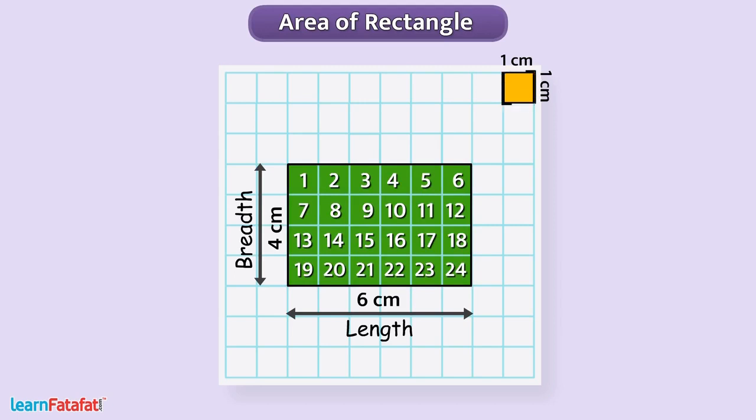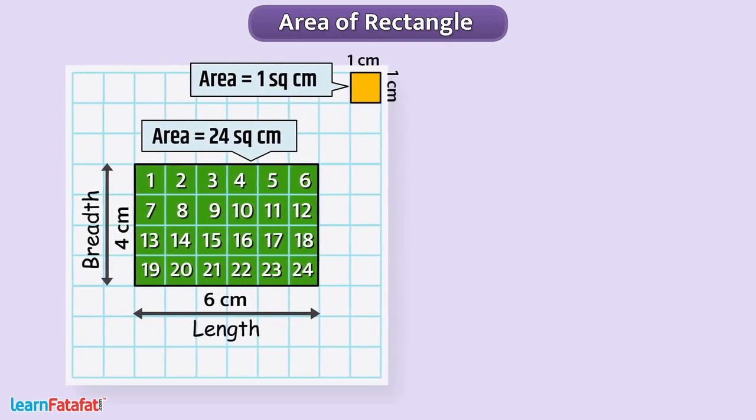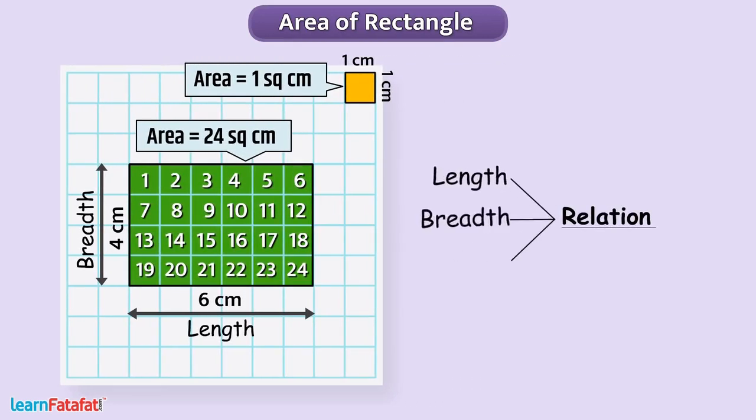Since each square has area 1 cm square, therefore, we can say that the rectangle has area 24 cm². Can you find any relation between length, breadth and area of the rectangle?